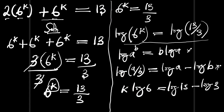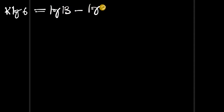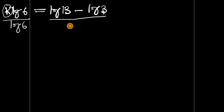Because of space, let's go to the next slide. We have k times log of 6 equals log of 13 minus log of 3. Since we are looking for k, we divide both sides of this equation by log of 6, which cancels, giving k equals log of 13 minus log of 3, all divided by log of 6.